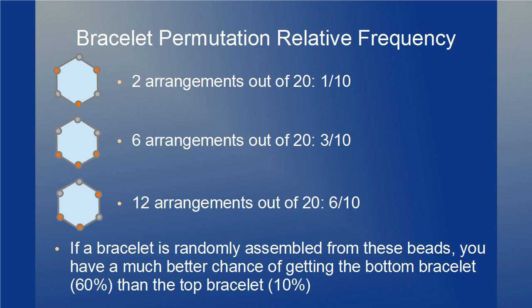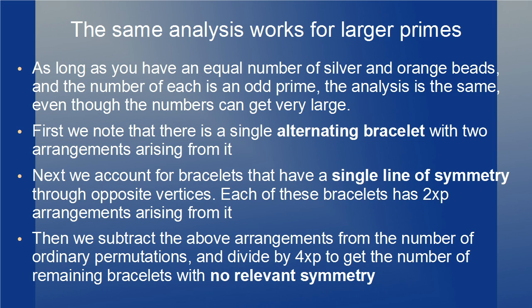If a bracelet is randomly assembled from these beads, you have a much better chance of getting the 2-2-1-1 bracelet at 60 percent than the alternating bracelet at just 10 percent. The same analysis works for larger primes. As long as you have an equal number of silver and orange beads and the number of each is an odd prime, the analysis is the same even though the numbers can get very large.